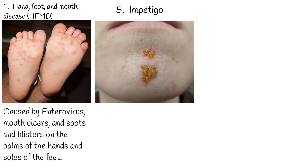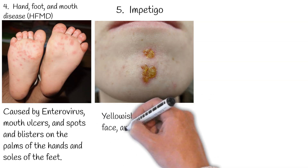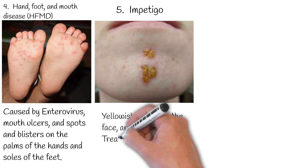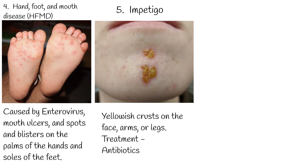The most common presentation of impetigo is yellowish crusts on the face, arms, or legs. Less commonly, there may be large blisters which affect the groin or armpits. Impetigo is most commonly caused by Staphylococcus aureus or Streptococcus pyogenes. Treatment is typically with antibiotic creams such as mupirocin or fucidic acid. Antibiotics by mouth, such as cephalexin, may be used if large areas are affected.